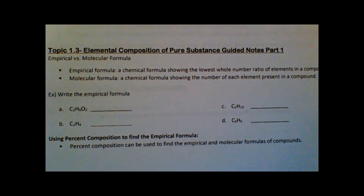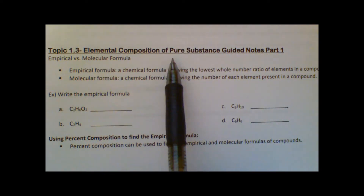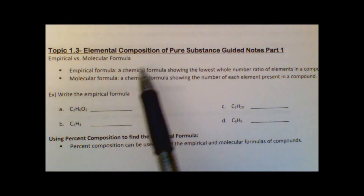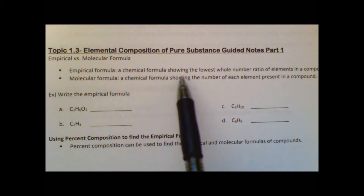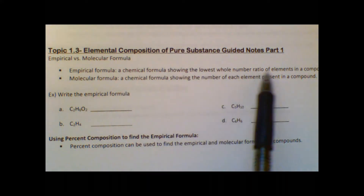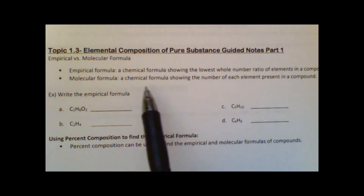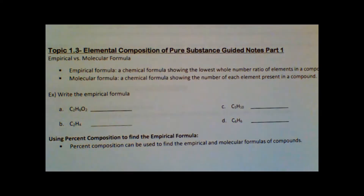We're going to take a look at topic 1.3: the elemental composition of pure substances. These notes are a little different — I'm going to do it by hand and just show you how the calculations work. We are looking at the empirical versus molecular formula. The empirical formula shows the lowest whole number ratio of elements in a compound, and the molecular formula shows the number of each element present in a compound.